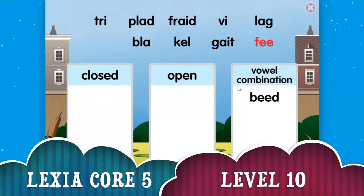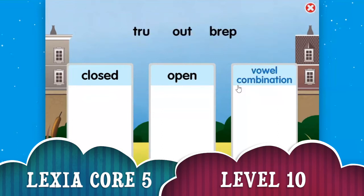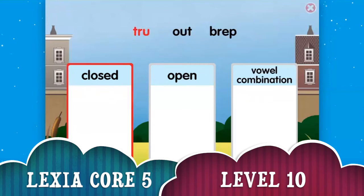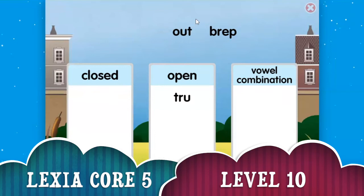Vowel combination syllables contain a vowel with another vowel or a vowel with one or more consonants. The letters make a vowel sound different from the short vowel sound. Okay, so vowel combination — is Brap a vowel combination? It looks like an open one. That's okay, Mifu. Open syllables end in a single vowel. The vowel sound is long. Right, it's long.